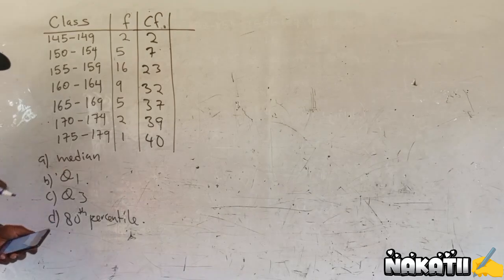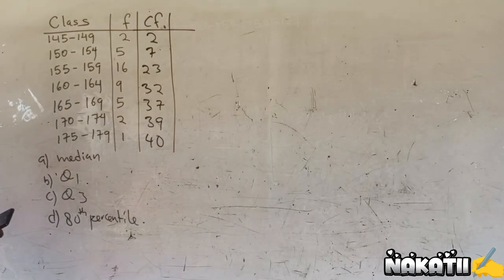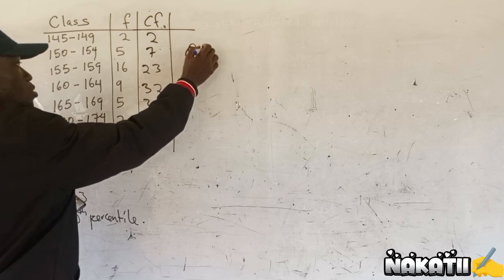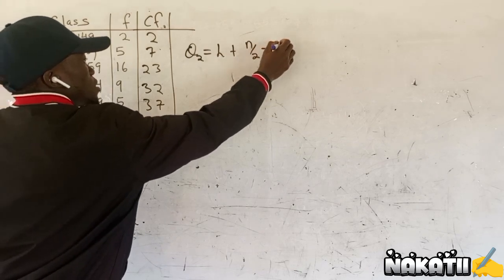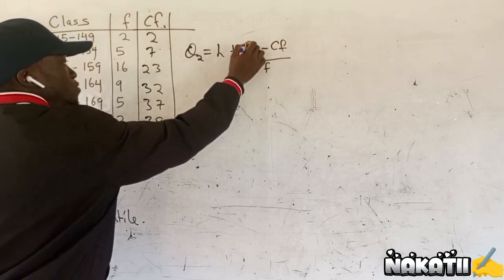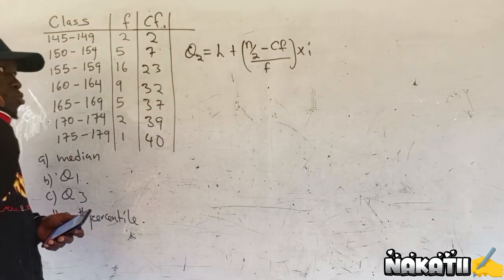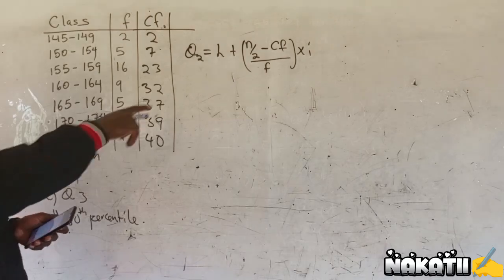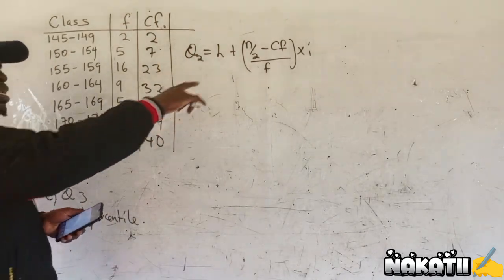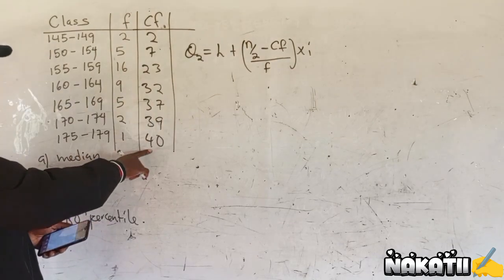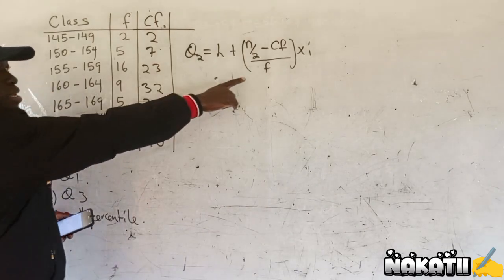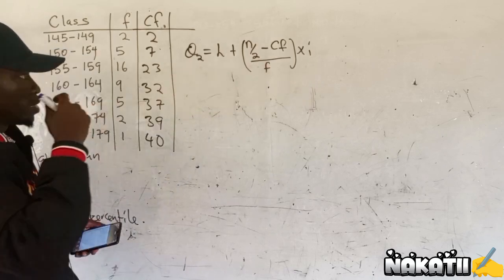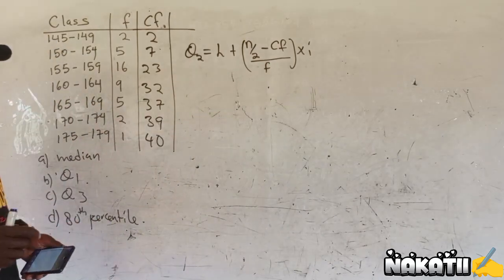We need that column when getting the median. The formula for calculating median is: Q2 equals L plus N over 2 minus CF, divided by F, multiplied by I. L is the lower limit of the median class, N is the total frequency which is 40, CF is the cumulative frequency above the median class, F is the frequency of the median class, and I is the class interval of the median class.